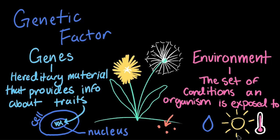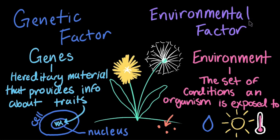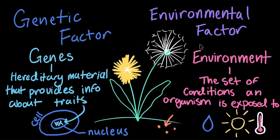Any influence the environment has on an organism's growth is called an environmental factor. So, if one dandelion plant is exposed to more sunlight than another and grows bigger as a result, we can say that the difference is due to an environmental factor.